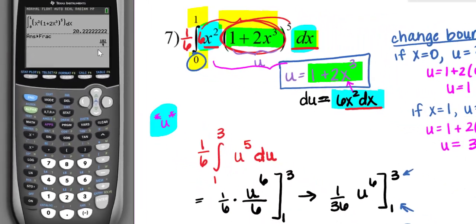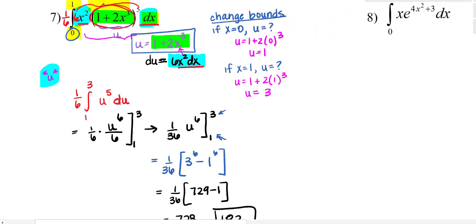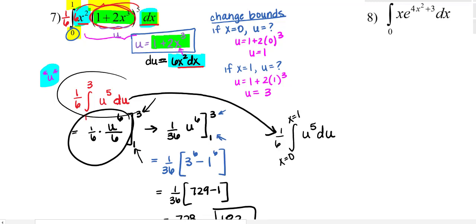Now if you don't change your bounds, then that is fine as well. But once you are here, your bounds are not used. For example, if you do not change your bounds, if you leave them, you cannot write from 0 to 1 because those are x's and not u's. So sometimes you might see them leave them in terms of x's, but you got to tell the reader that you have bounds that are in terms of x and not u.